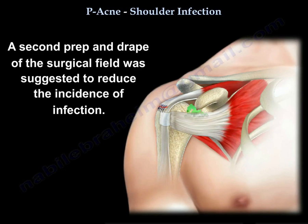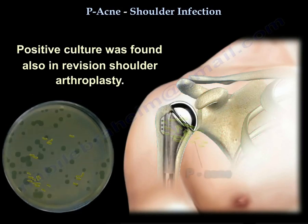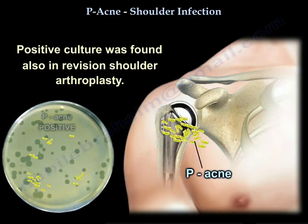Many open rotator cuff repairs after arthroscopic surgery may have an increased risk of infection with this organism. A second prep and drape of the surgical field has been suggested to reduce the incidence of infection. Positive culture was also found in revision shoulder arthroplasty.